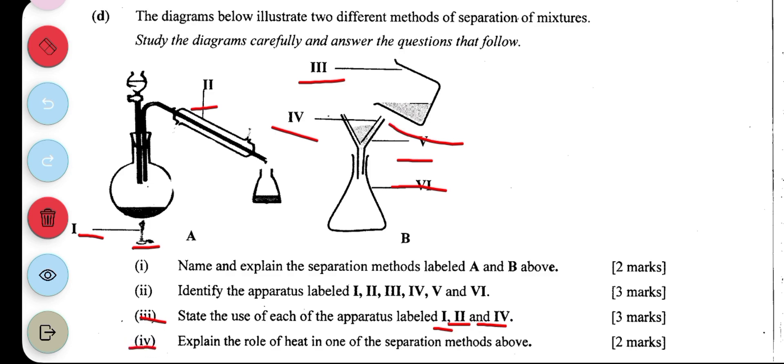Explain the role of heat in one of the separation methods. The heat is definitely used during distillation. During distillation, the mixture is first heated resulting in vapor through a condenser. The condenser then cools the vapor in order to obtain the pure liquid, leaving behind a soluble solute.